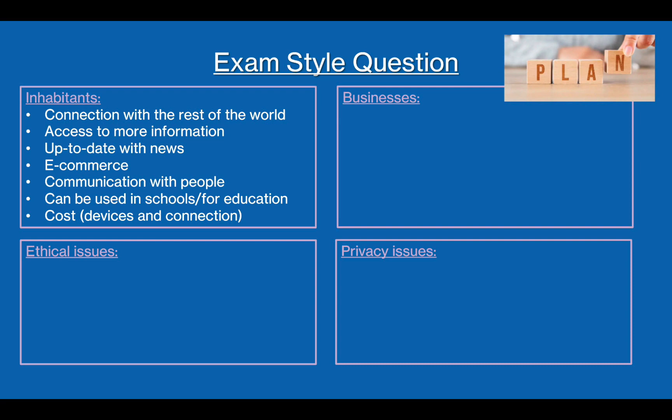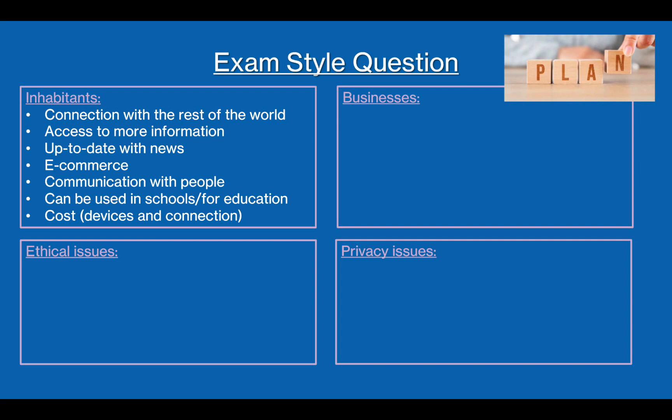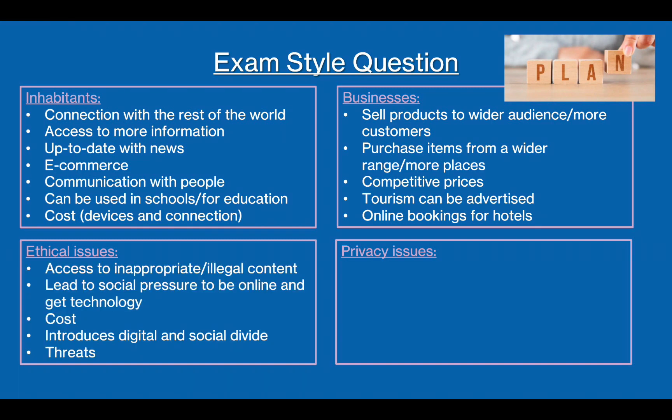Just now we briefly touched on the impacts of businesses, but going into more detail: by being able to communicate with the whole world via the internet, businesses have a larger audience to buy and sell products from. This means they can sell their products for more money and thus earn more. They could also use computers within the tourism industry to advertise and handle the bookings of hotels and attractions. For ethical issues, as we discussed earlier, you could speak about the digital divide that could be formed, the financial benefits and/or drawbacks, etc.